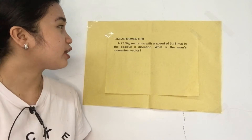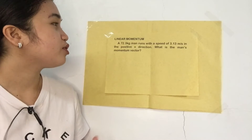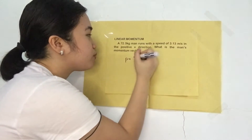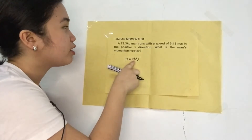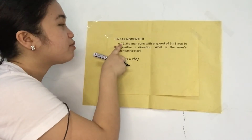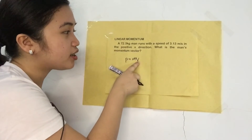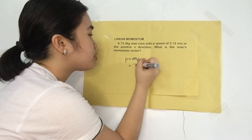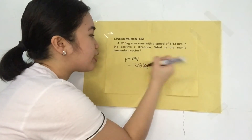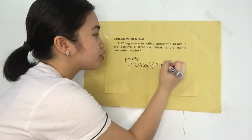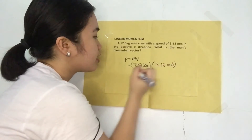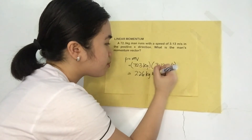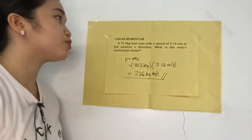So, ang gagawin natin is hahanapin natin yung man's momentum. Ang formula ng momentum is P is equal to M times V. Yung M natin is yung 72.3 kilograms man and yung ating velocity is yung 3.13 meter per second. So, momentum is equal to 72.3 kilograms times 3.13 meter per second, and this is equal to 226 kilograms meter per second. So, ito na yung momentum ng man.